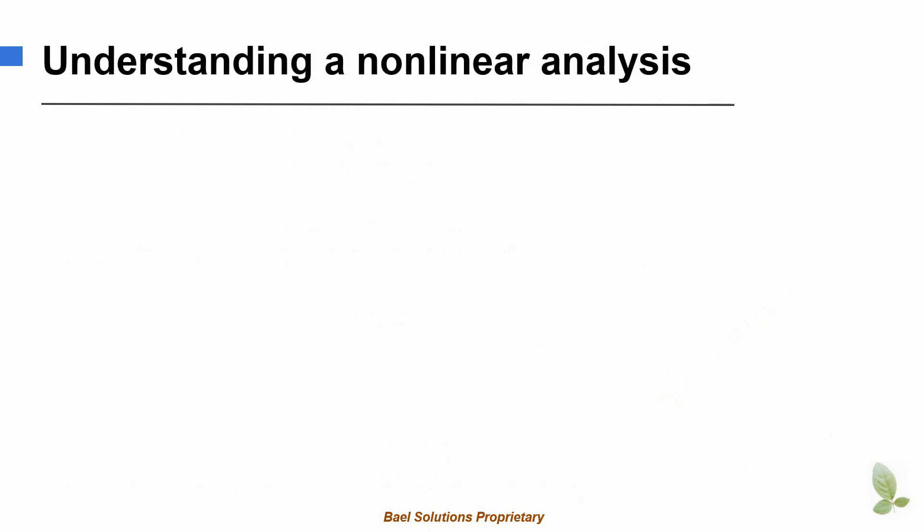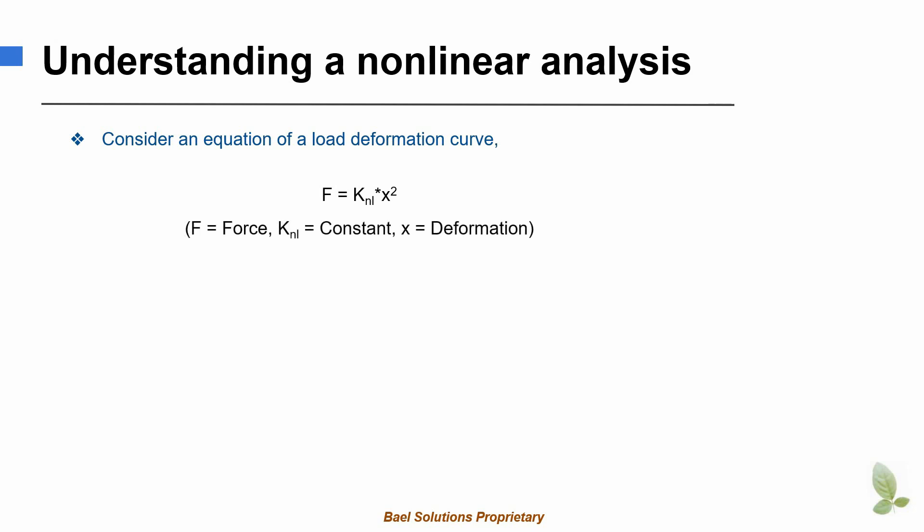As we have understood what is a linear system, now we are going to see what is a non-linear system. Consider an equation of a load-deformation curve: f equals k_nl times x squared. In this equation, f is the applied force, k_nl is a stiffness-like constant, and x is the deformation in the structure. Note that in this case k_nl will have a unit of force divided by the square of the deformation. Therefore, k_nl is not the stiffness but a stiffness-like constant.